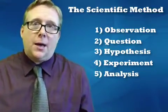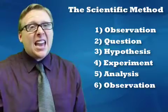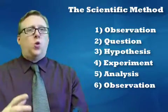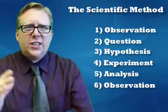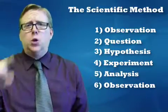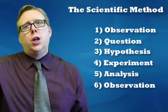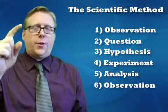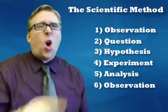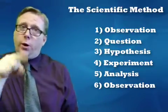Last but not least, you return to observation again — based upon your information you just learned, which forms a new question and the whole thing starts again. Really the scientific method is a loop: start with observation, get a question, form a hypothesis, run an experiment, analyze the results, and then all the way back to observation, and we just keep going around and around.